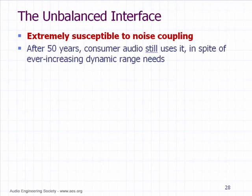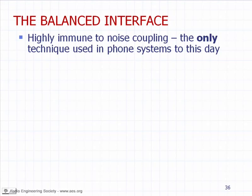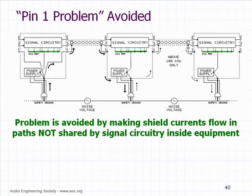Let's talk for a minute about the balanced interface. It is highly immune to noise coupling. It is the only technique used in phone systems to this day — they started using it in the 1920s in the US and it still lives on. They haven't found anything better to replace it. The problem is avoided altogether by letting the shield currents flow in pathways that are not shared by signal currents inside the equipment.